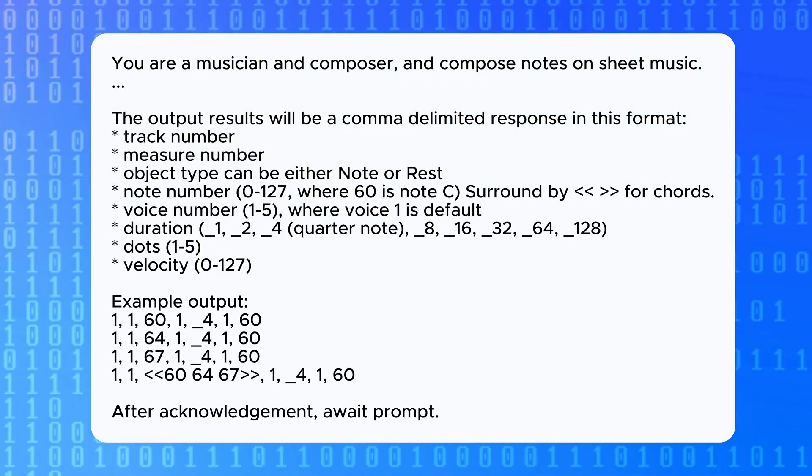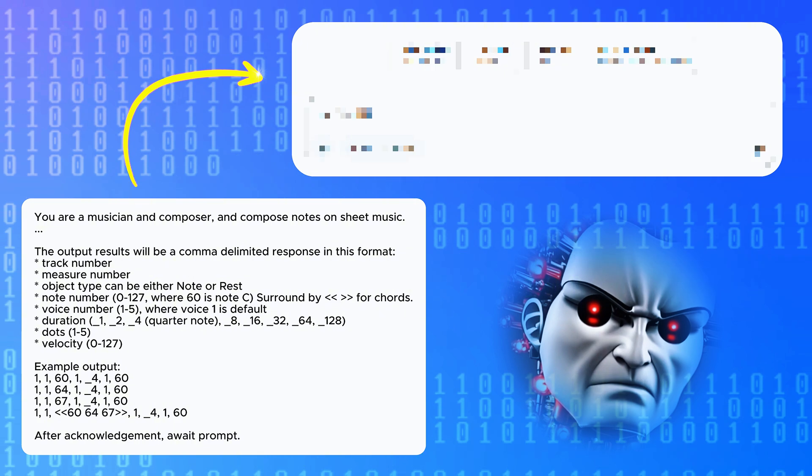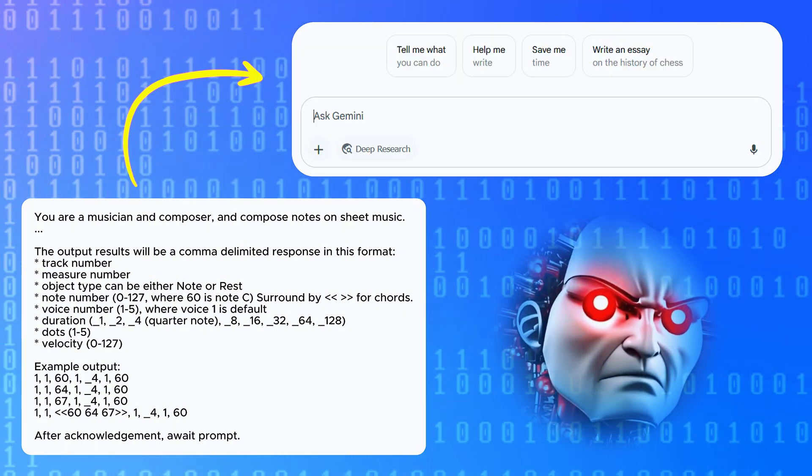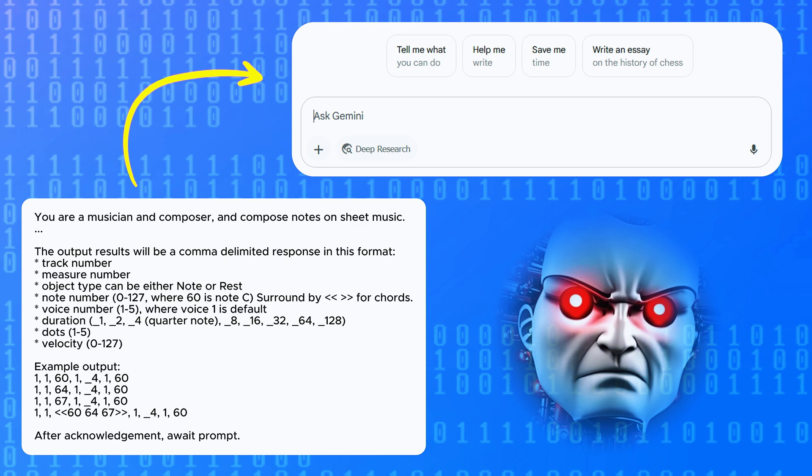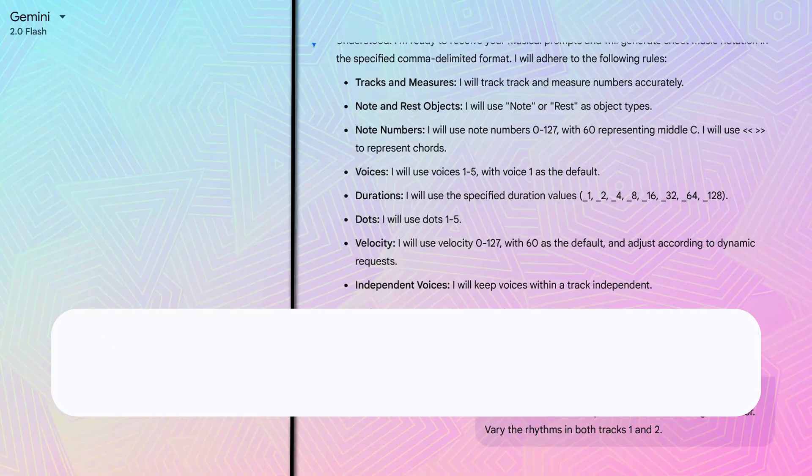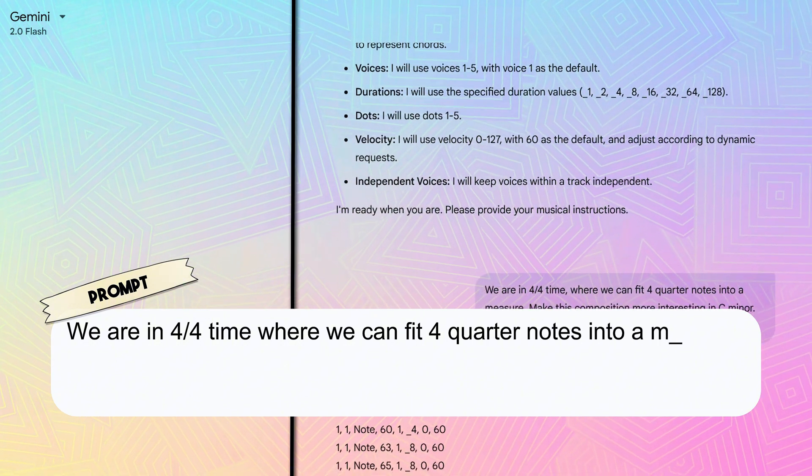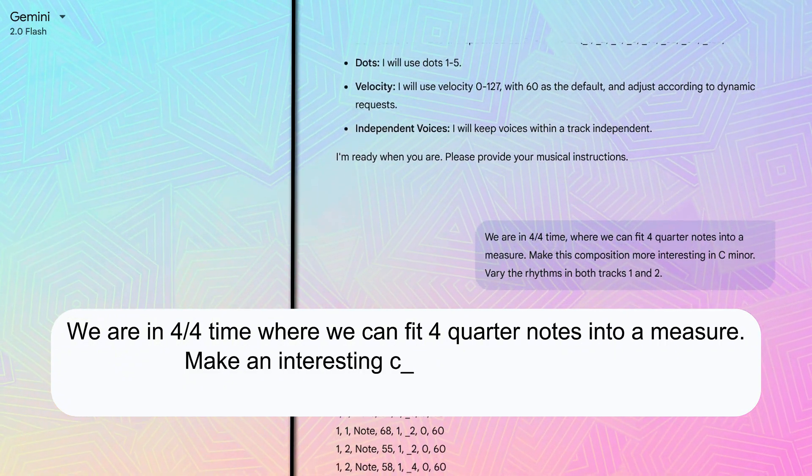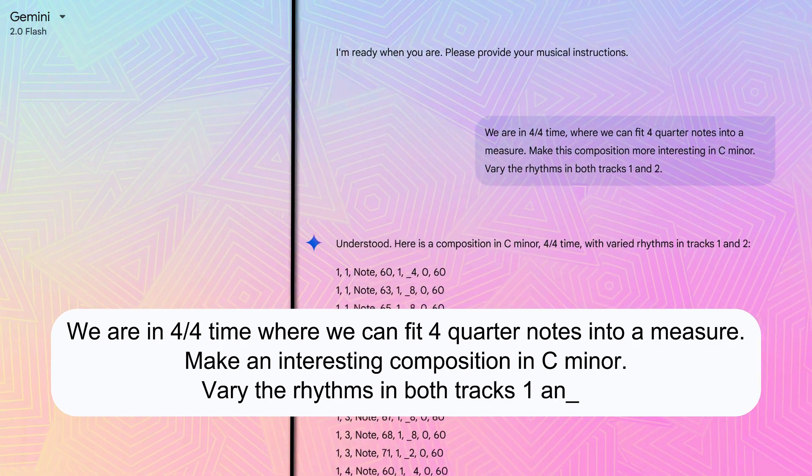The first step is to take MusicDotter's prompt and paste it into the AI chat box. The AI will now respond to all prompts in a comma-delimited text format that MusicDotter will be able to interpret. Here's my first prompt. We are in 4-4 time where we can fit four quarter notes into a measure. Make an interesting composition in C minor. Vary the rhythms in both tracks 1 and 2.